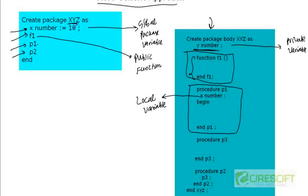So we have a global variable x, a private variable y, and a local variable a. Variable x is accessible both inside and outside the package body. Variable y is only accessible inside the package body. Variable a is only accessible inside procedure p1. That is the difference between x, y, and a.